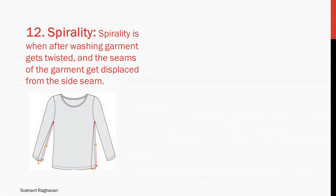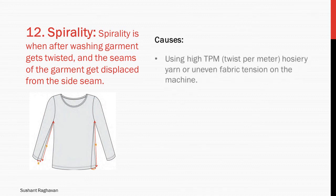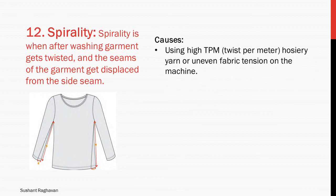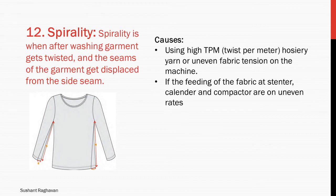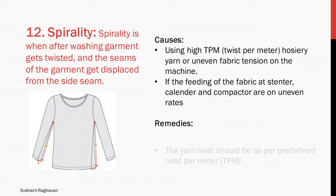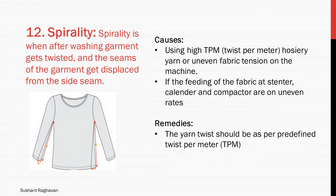Spirality: when after washing, the garment gets twisted and the seams of the garment get displaced from the side seam. Causes: using high twist per meter yarn or uneven fabric tension on the machine. If the feeding of the fabric at stenter, calendar, and compensator are at uneven rates. Remedies: the yarn twist should be as per the predetermined twist per meter.